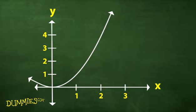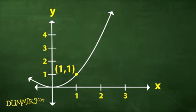Say you want the exact slope or steepness of the parabola y equals x squared at the point. With the slope formula from algebra — which says that you can find a slope when you know the coordinates of two points on a line — you can figure the slope of the line between those two points.